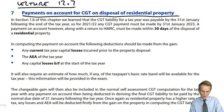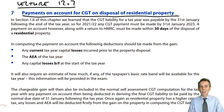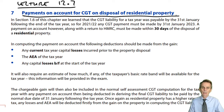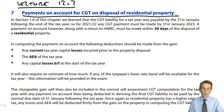Here we're talking about the disposal of residential property that isn't your private main residence — it's an investment property. In relation to such, we already know that we have higher CGT rates: 18% and 28% rather than 10% and 20%. Finance Act 2020 also brought in a requirement that payments on account should be made regarding the capital gains tax due on the disposal of a residential property.